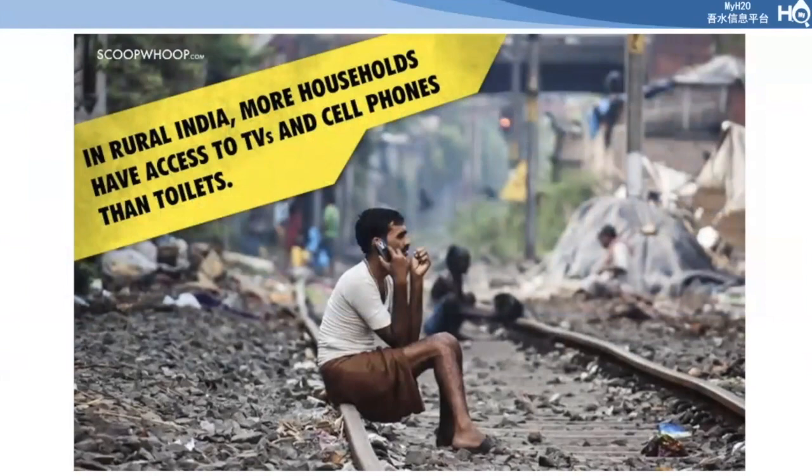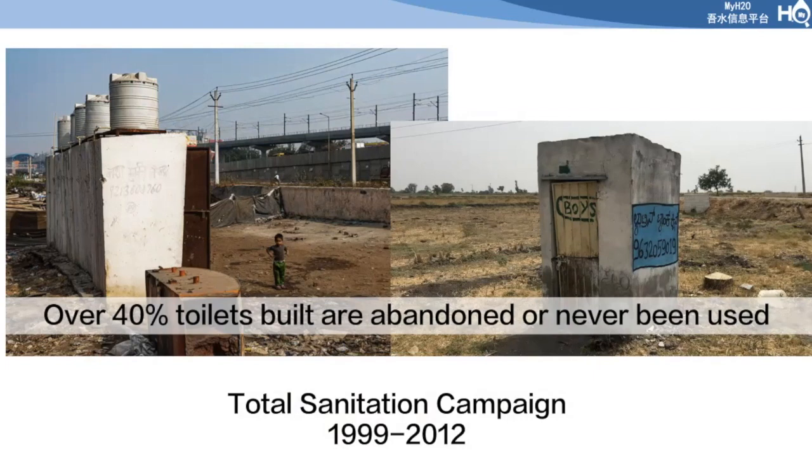As background: in rural India, there are actually more households with access to TVs and cell phones than toilets. The Total Sanitation Campaign started in the 1990s and ran to around 2012. The government recognized that many Indian households lack toilets, still practice open defecation, and have poor sanitary habits — which is a leading cause of infant mortality and diarrheal diseases prevalent in these villages.